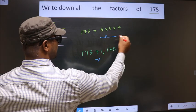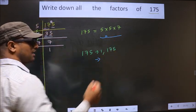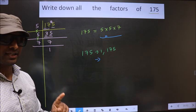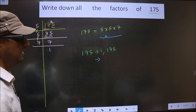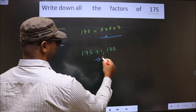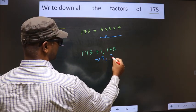Now from these numbers, you select one different number at a time. Like that, how many numbers do we get? We get 5 and 7. That's it.